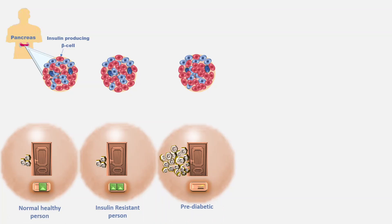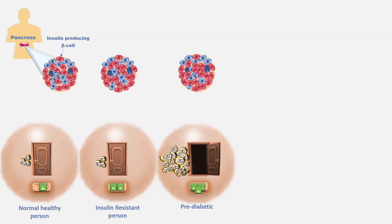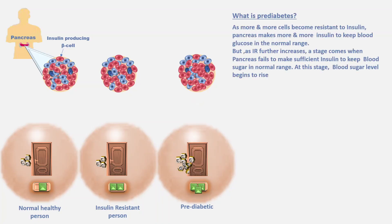After meals, the level of glucose in the blood rises. The pancreas makes insulin and it binds to the insulin receptor, but there is no response. The pancreas makes more insulin, binds to the receptor — again, there is no response. But the pancreas continues to make more insulin. Ultimately, the cell responds and takes up glucose. At this stage, in spite of best effort, the pancreas fails to make sufficient insulin to keep blood sugar level at the normal range. The level of blood sugar begins to rise. In a pre-diabetic, the level of glucose is higher than normal but not high enough to be diagnosed as diabetes.